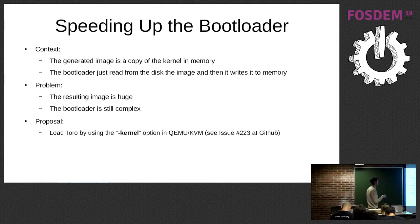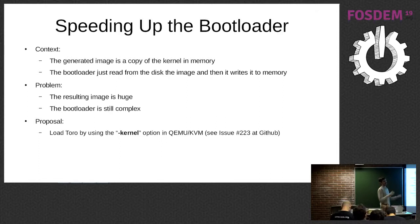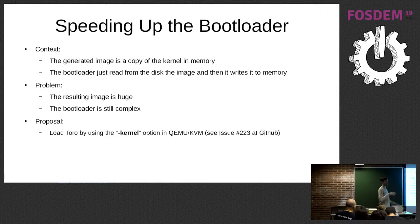The problem I had at the beginning was that the generated image, which includes the user application and the kernel, was very large. This was the case because, in order to make the bootloader simpler, we said the image would be a copy of the kernel in memory — a full memory image of the kernel. We did it this way because it makes the bootloader simpler: you just need to read the image and put it in memory, no compression needed. The main problem is you end up with a huge image — as you can see, it was four megabytes — and the bootloader is still complex, because you still need to initialize some hardware, paging, and so on.